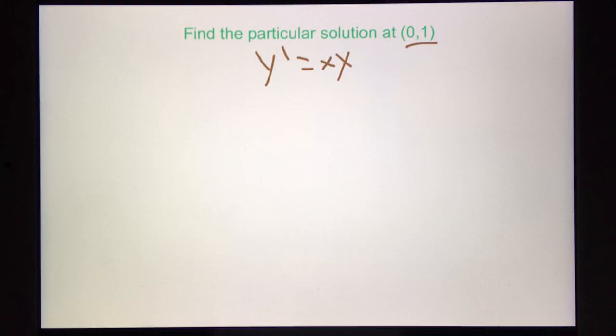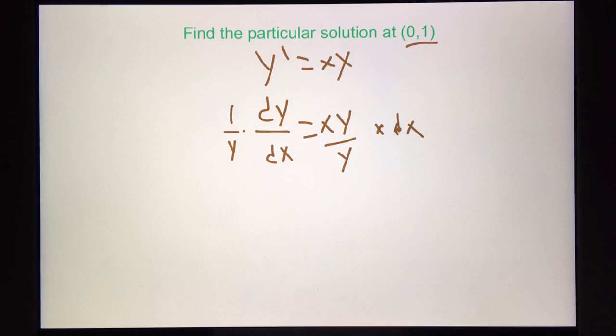How we do that is we integrate. We find the antiderivative of this equation to find the function. And so we can turn the y prime into dy over dx. And then we divide by y and multiply by 1 over y. And then we can also multiply by dx.